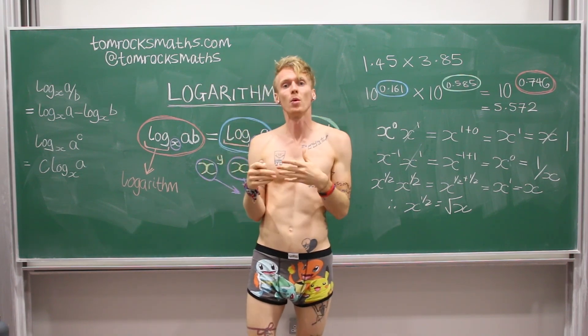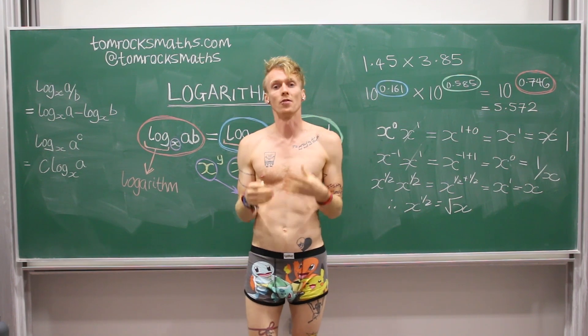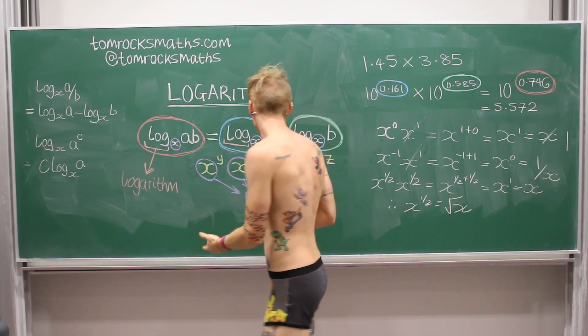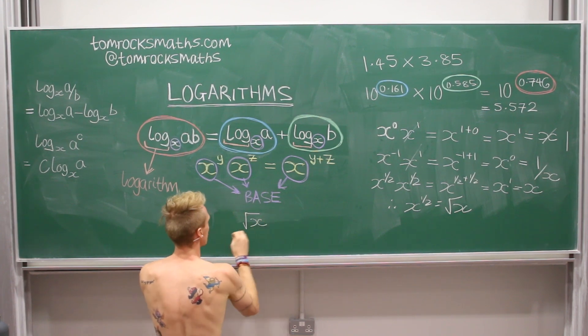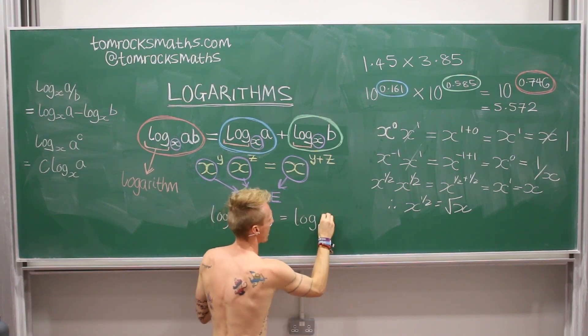So if you want to work out the square root of X, if you take the logarithm of that, that is equal to the log of X to the half. And using the result over on the left of the board, we know that that is just the half of log X.